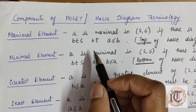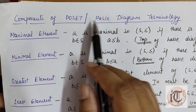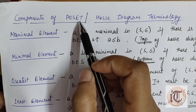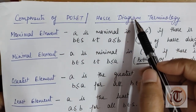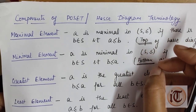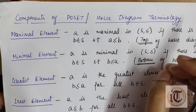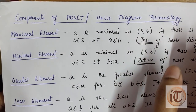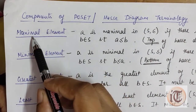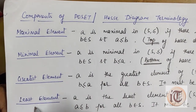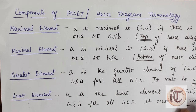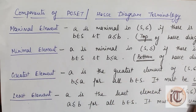In this video we are going to discuss our next topic: components of poset and Hasse diagram terminology. We already discussed what a poset is, the properties for a set to be a poset, and how to draw a Hasse diagram step by step as well as directly. Now after drawing the Hasse diagram we have to find some components. In this video we are going to discuss four components of poset: maximal element, minimal, greatest, and least. First we discuss the theoretical concept and then apply all four components with an example.